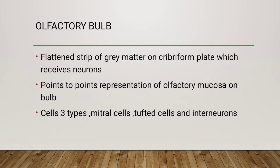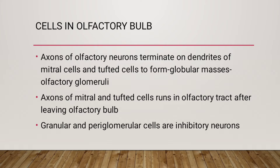There are three types of cells in the olfactory bulb: mitral cells, tufted cells, and interneurons. Axons of olfactory neurons terminate on dendrites of mitral cells and tufted cells to form globular masses called olfactory glomeruli. Axons of mitral and tufted cells then run in the olfactory tract after leaving the olfactory bulb.